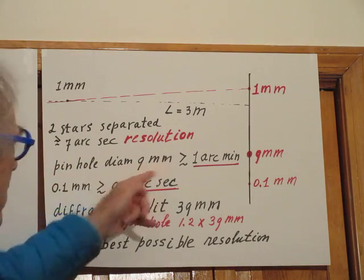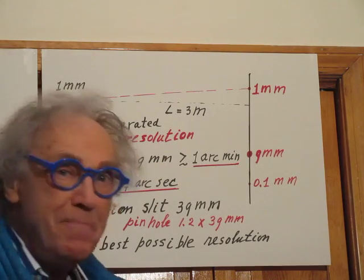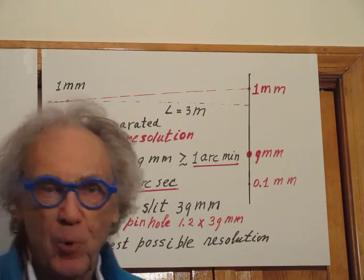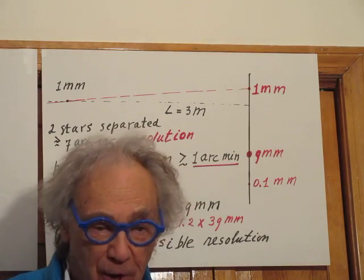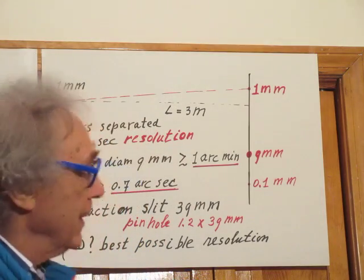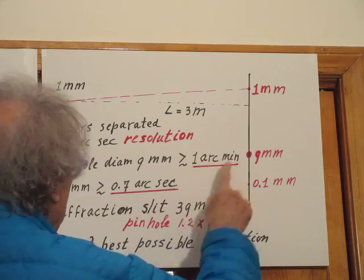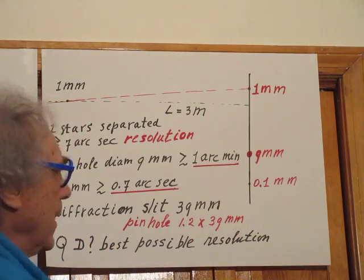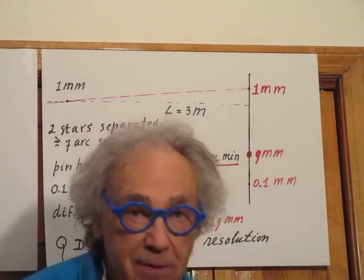If your pinhole had a diameter of 9 millimeters, the resolution would be 9 times worse, so the stars would have to be separated by about 1 arc minute.